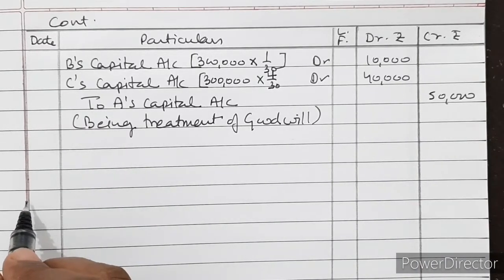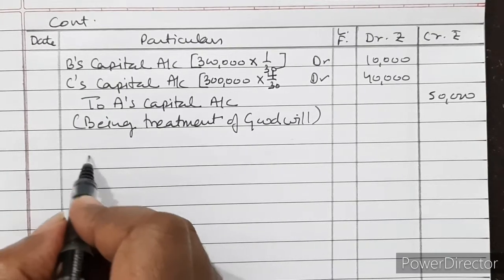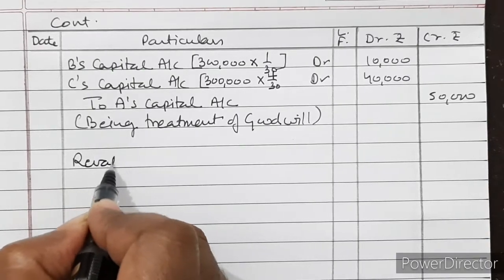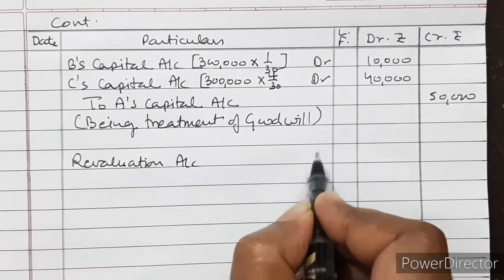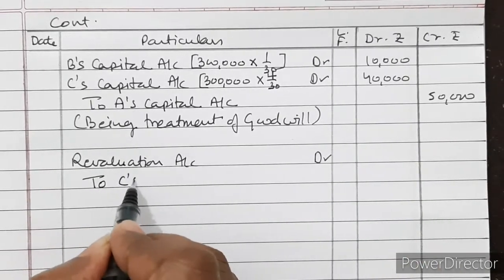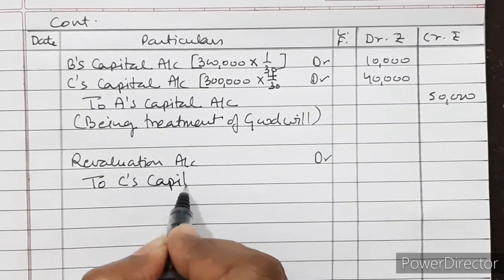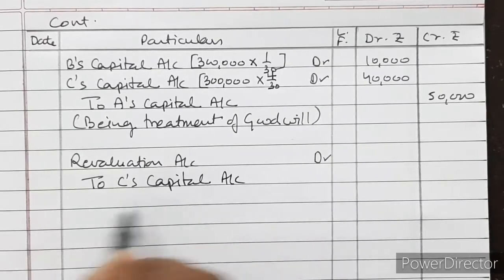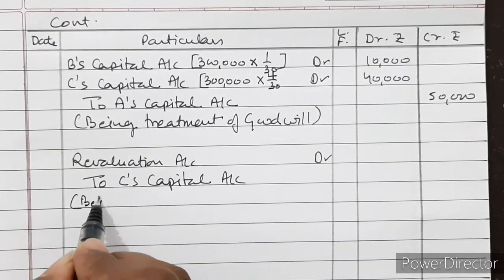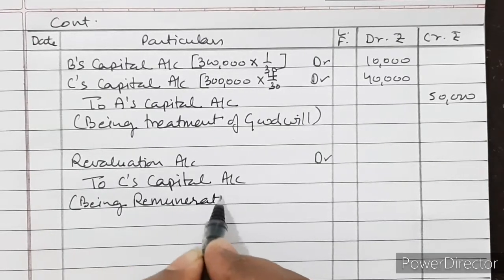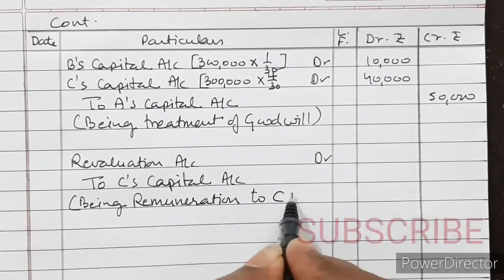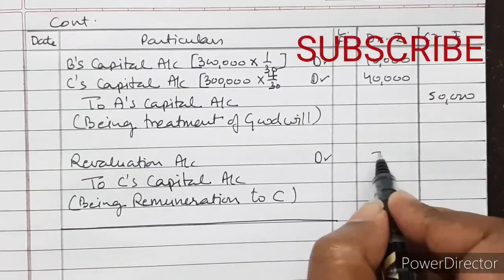Lastly, C was to get a remuneration of Rs. 5,000. So Revaluation Account debited to C's Capital Account for Rs. 5,000. Being remuneration to C. Actual expenses are Rs. 3,000 but what the firm has paid to the partner — Rs. 5,000 — is what is recorded in the books of account.